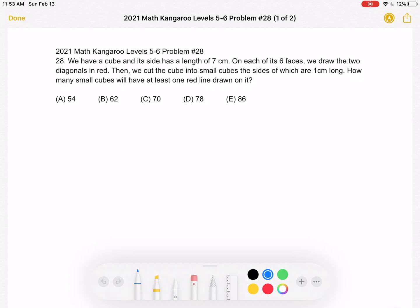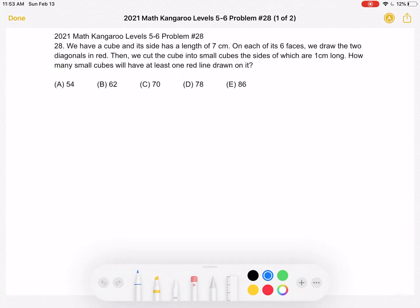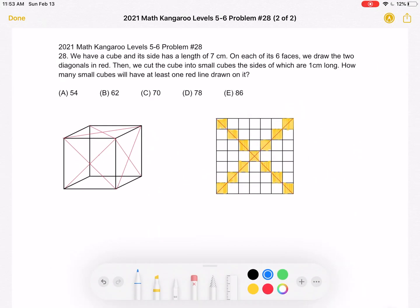This is the problem as it originally appeared on the test and here is where we'll be doing the solution. To start I've sketched out some of the red diagonals on our cube and we can begin by looking at one of the six sides of our seven by seven cube.